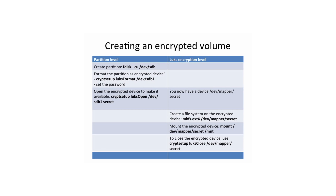Once you have formatted the encrypted device, you need to open it to make it available to your operating system — that would be the cryptsetup luksopen command. This results in a new device created in the /dev/mapper directory. This devmapper device takes the name you used when running the cryptsetup luksopen command. On this devmapper device, you can create a file system, mount it, and once you've stopped working with it, you can close it.